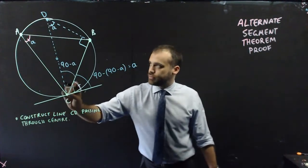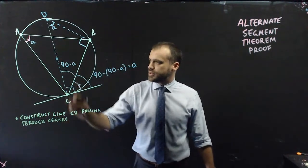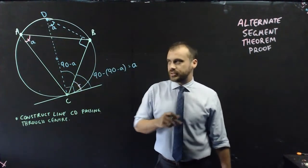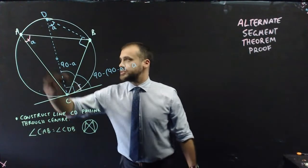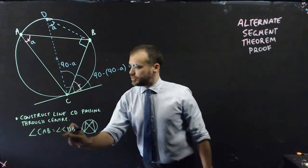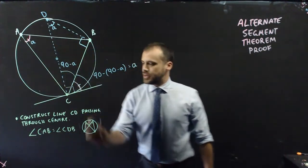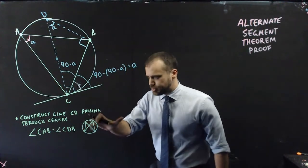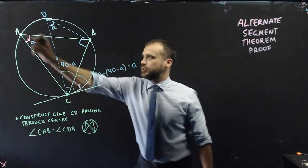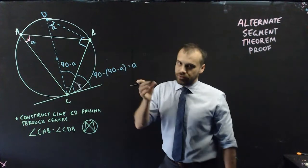First step was constructing a line from C to D passing through the center. Now, what was our next step here? Our next step is to spot that angle CAB is equal to angle CDB because of our little, sometimes people call it the bow tie theorem or the multiple mountain theorem, whatever you want to call it, angles subtended off the same arc.